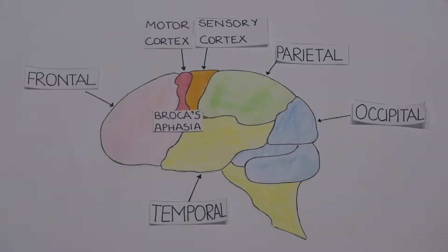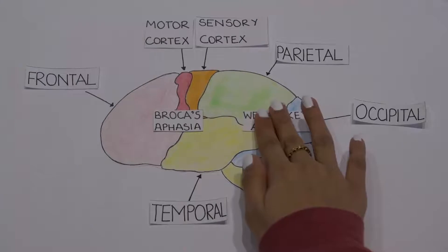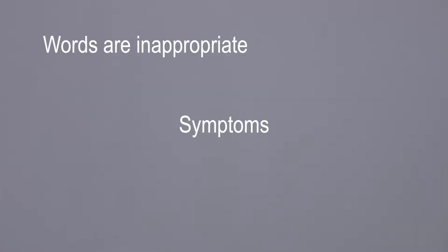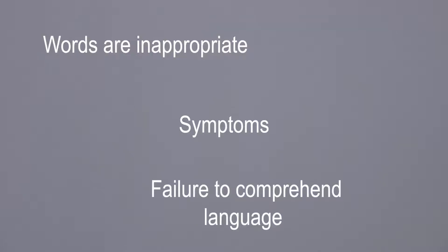Wernicke's aphasia results from damage to the posterior temporal lobe. The Wernicke's area is responsible for grammar. Therefore, sufferers of this disorder speak fluently, but their words are inappropriate and they fail to comprehend the language.